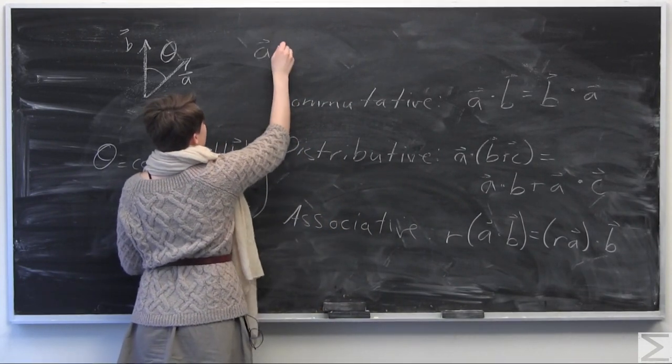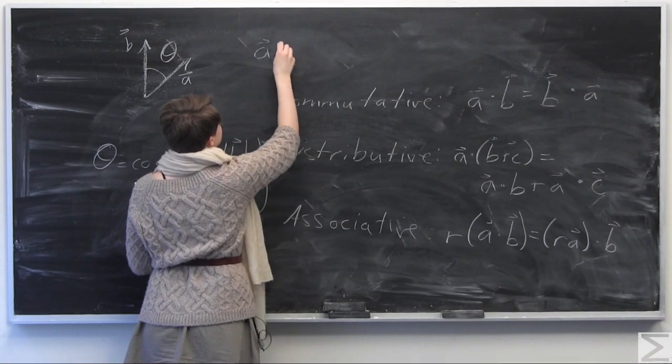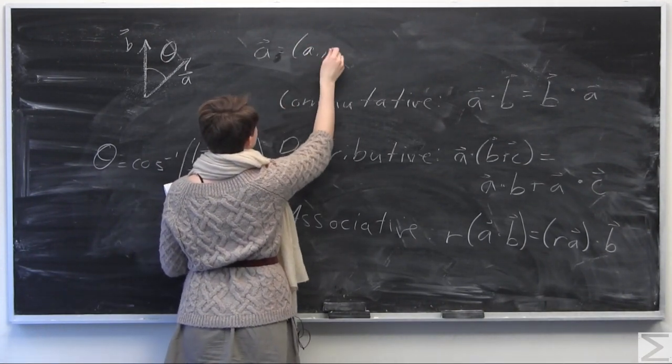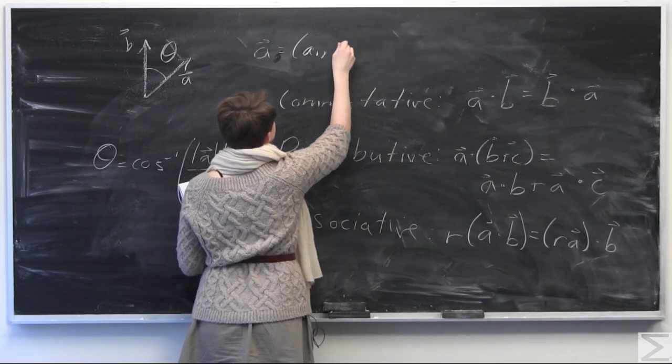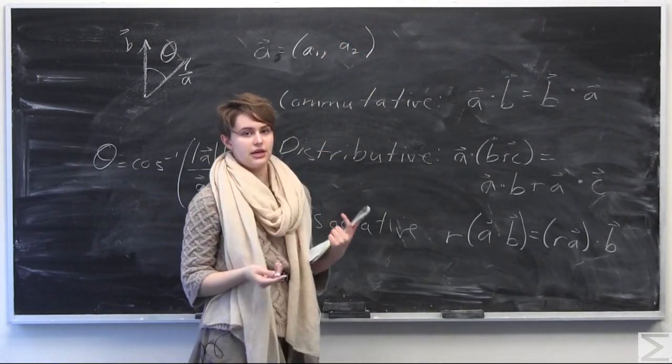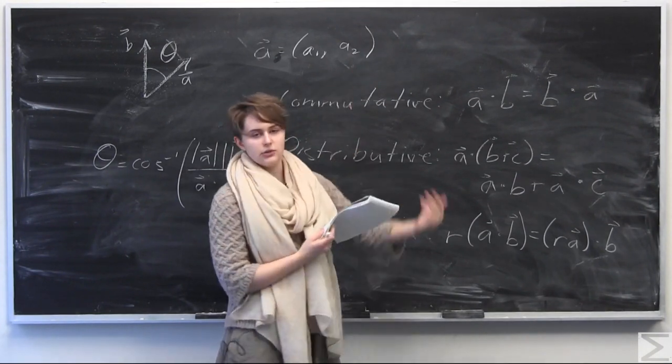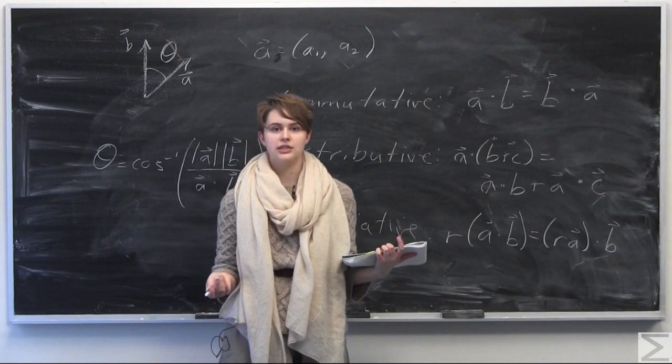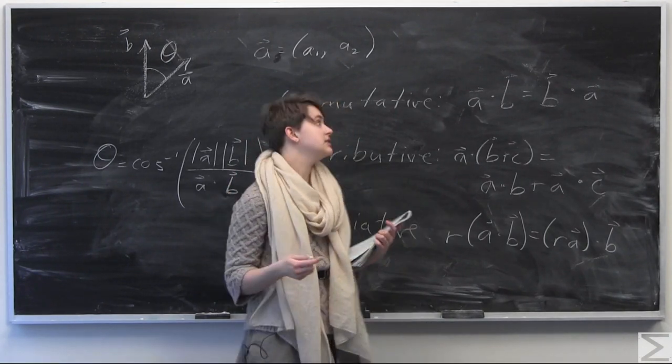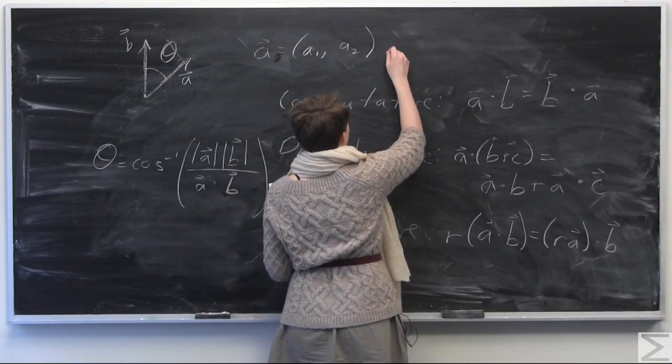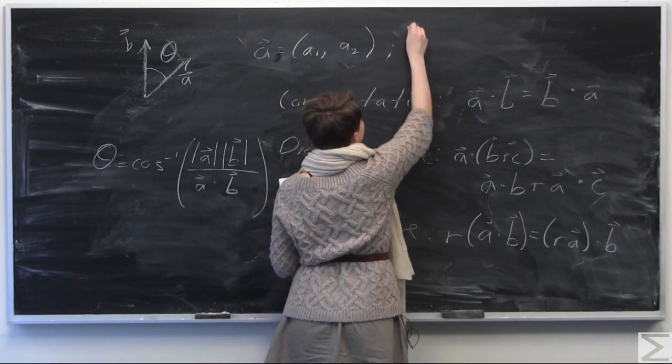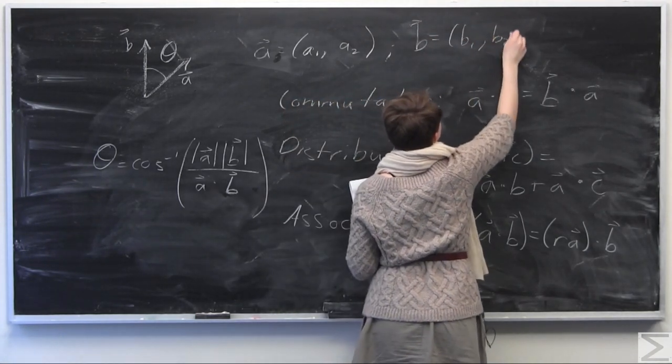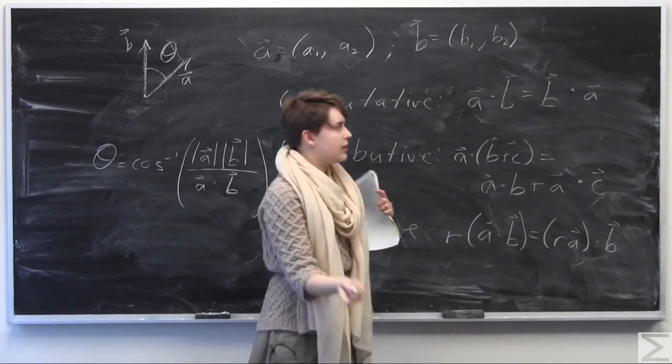So given two vectors A, where A is equal to, say we have here A would just be equal to A1 comma A2, but it can be any number of components as long as the number of components in A is equal to the number of components in the vector you're dotting it with. Because the dot product is only defined between vectors of the same number of elements. And so we have vector B here is equal to some B1, B2. You can just think of this as X and Y, or X1, Y1, or something like that.